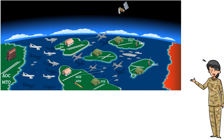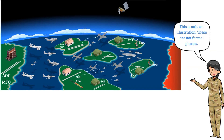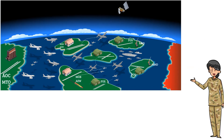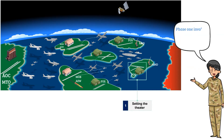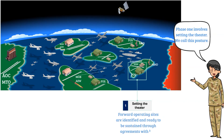Now that we have the big picture, let's step through the phases of ACE. As mentioned, ACE refers to a scheme of maneuver. Phase one involves setting the theater. We call this posture, and it is tied to all other elements of ACE as the starting point. We do this well ahead of need, ideally during the competition phase. It involves pre-positioning war reserve material. Forward operating sites are identified and ready to be sustained through agreements with host nations.